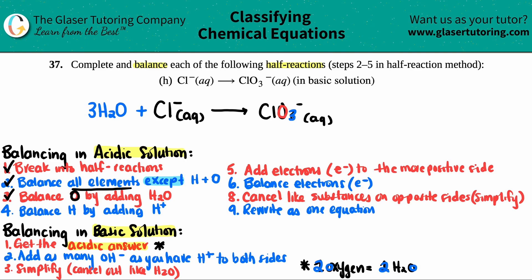Step four: balance hydrogen by adding H⁺. For every hydrogen you need, add one H⁺ to the side that needs it. I now have three H₂Os on the reactant side, giving me six hydrogens there, and no hydrogens on the product side. So I add six H⁺ to the product side, and now hydrogen is balanced.